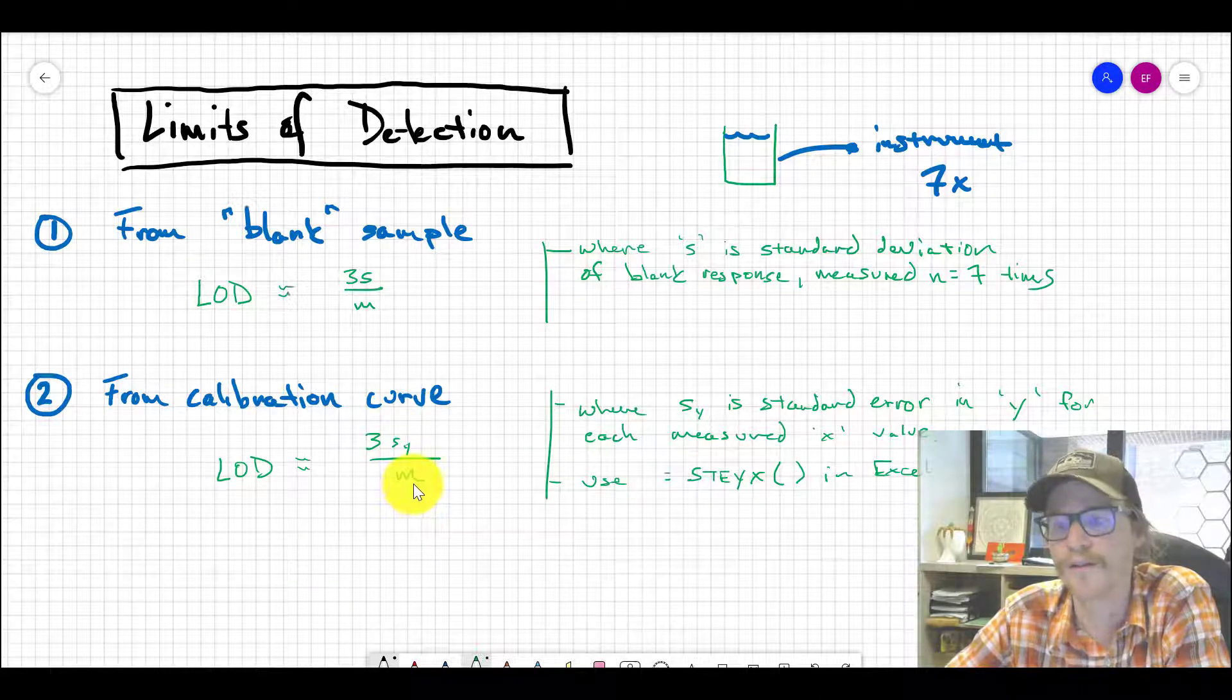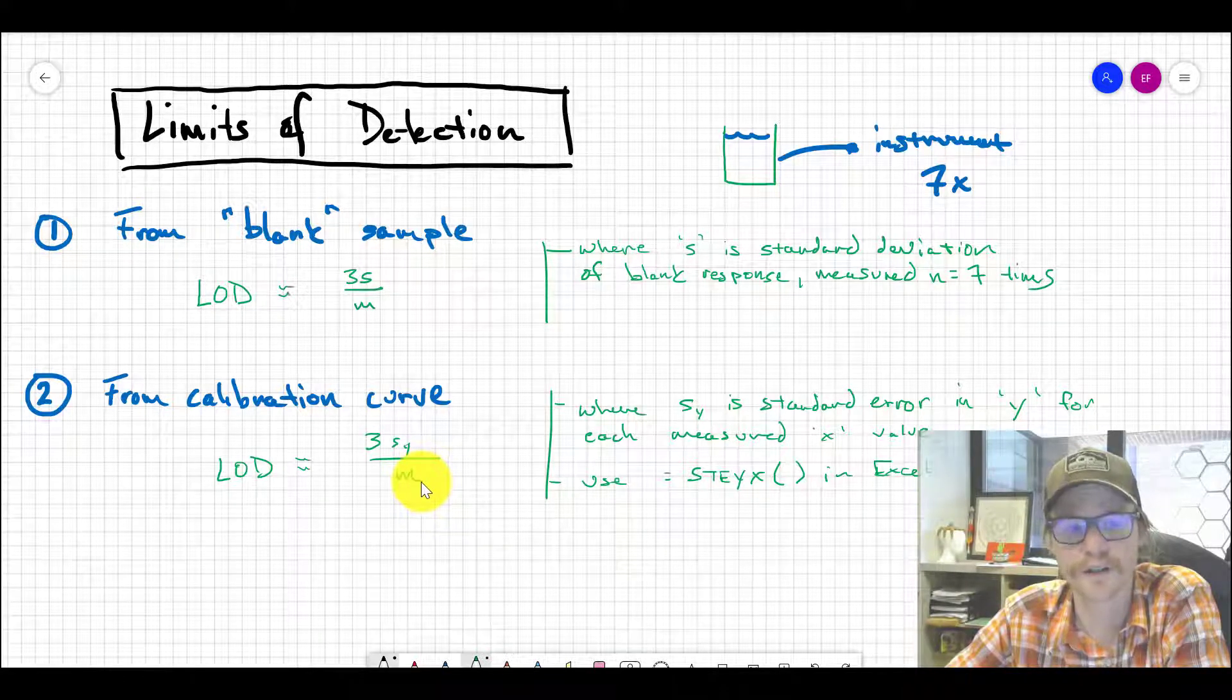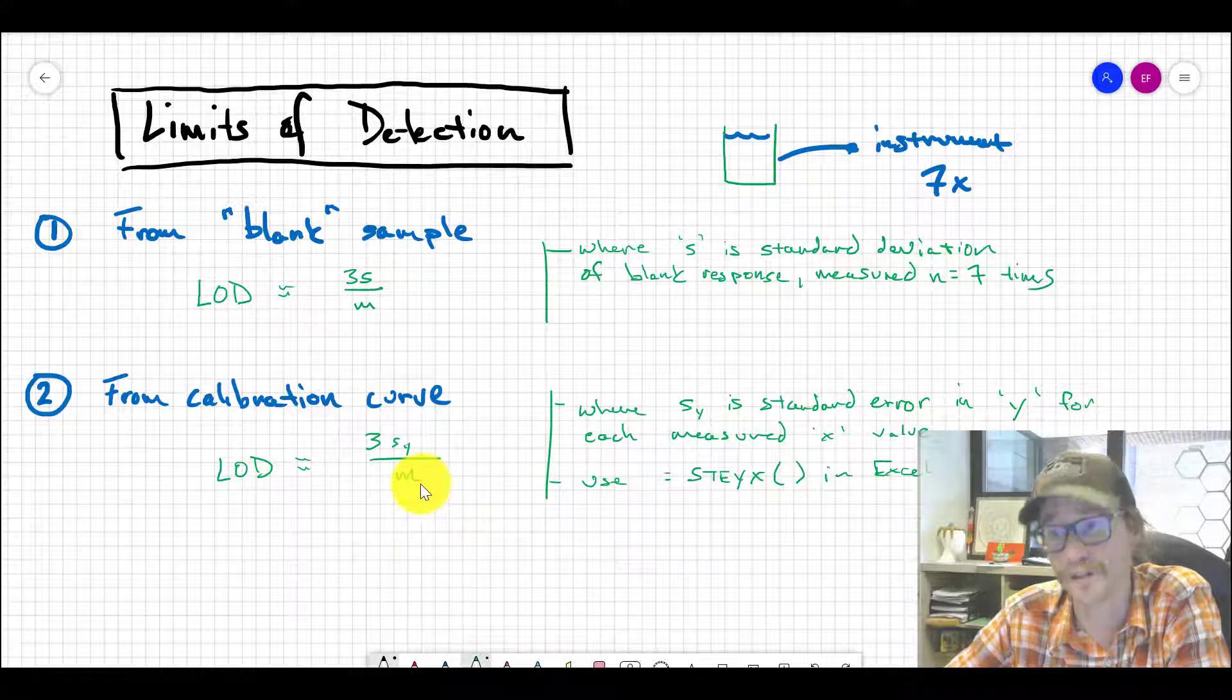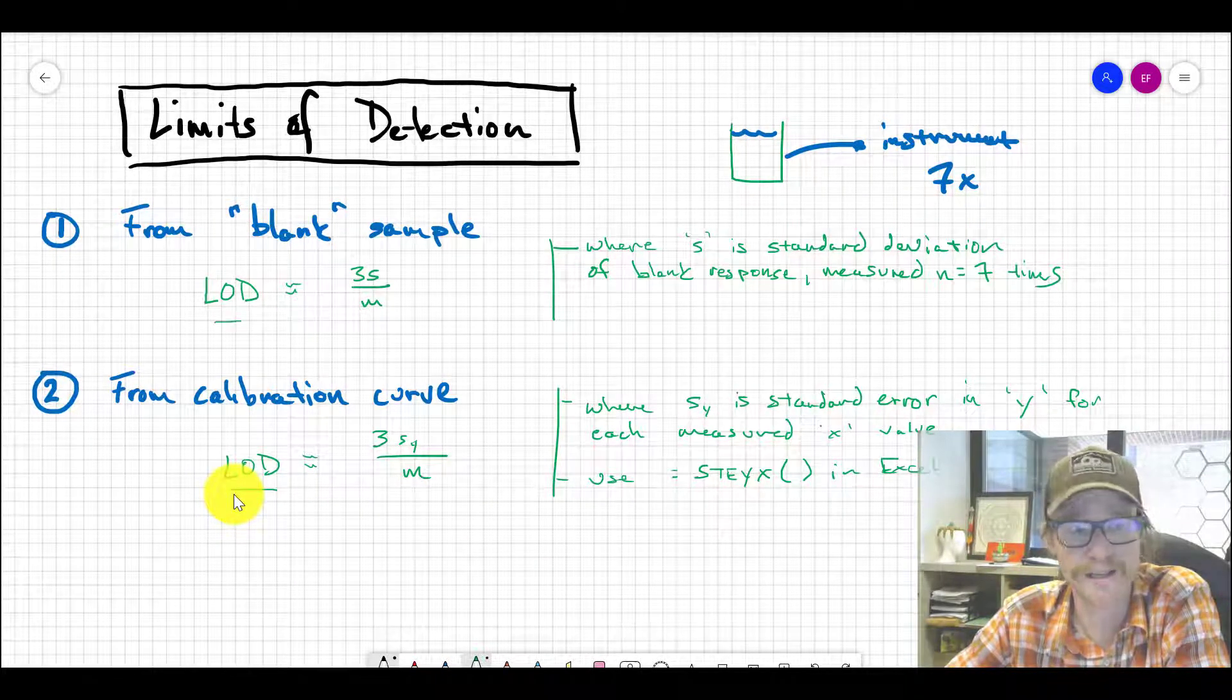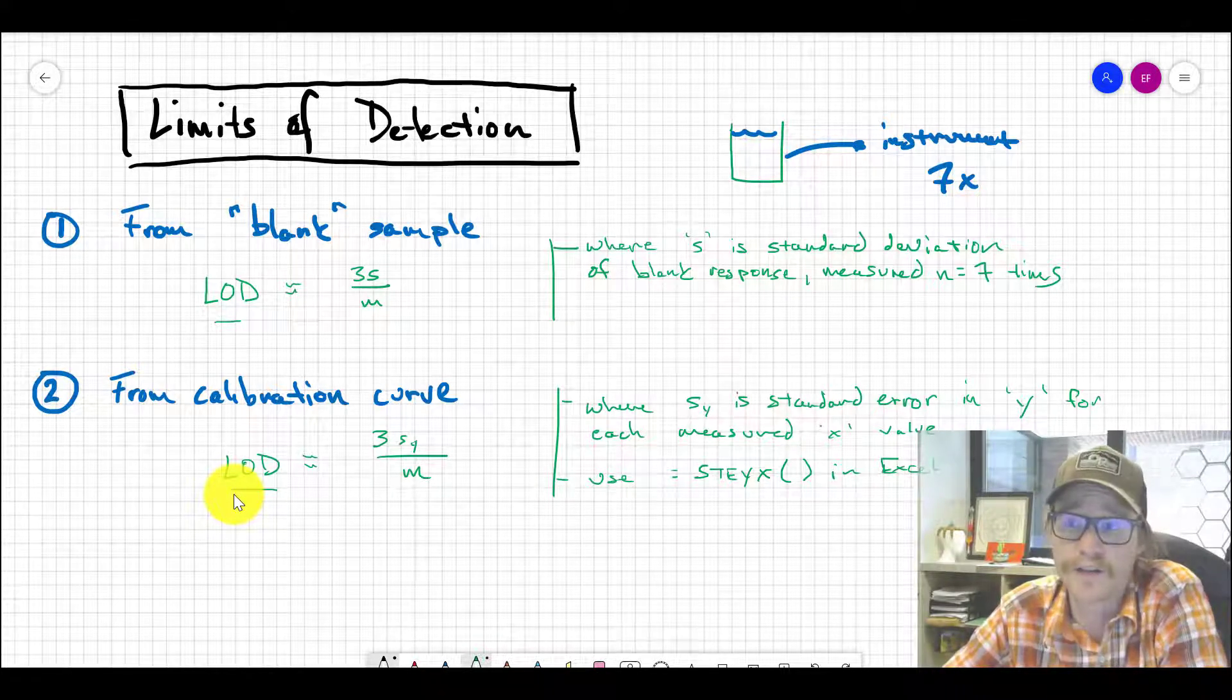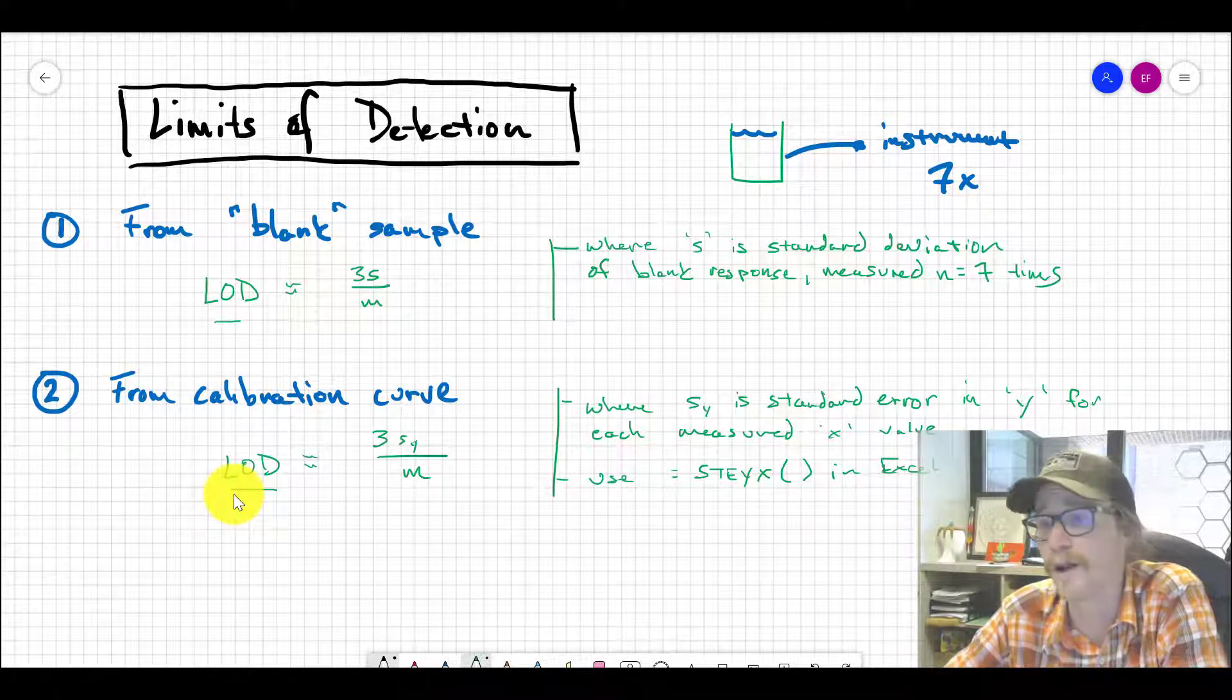The slope of the calibration curve is simply a unit conversion factor. It converts your response units, which your standard deviation is measured in, into concentration units, which is how you'd want to report a limit of detection. It doesn't make sense to report LOD in response units because that's arbitrary depending on the instrument. Reporting in concentration units is helpful because it's ubiquitous and can be referenced by other scientists.